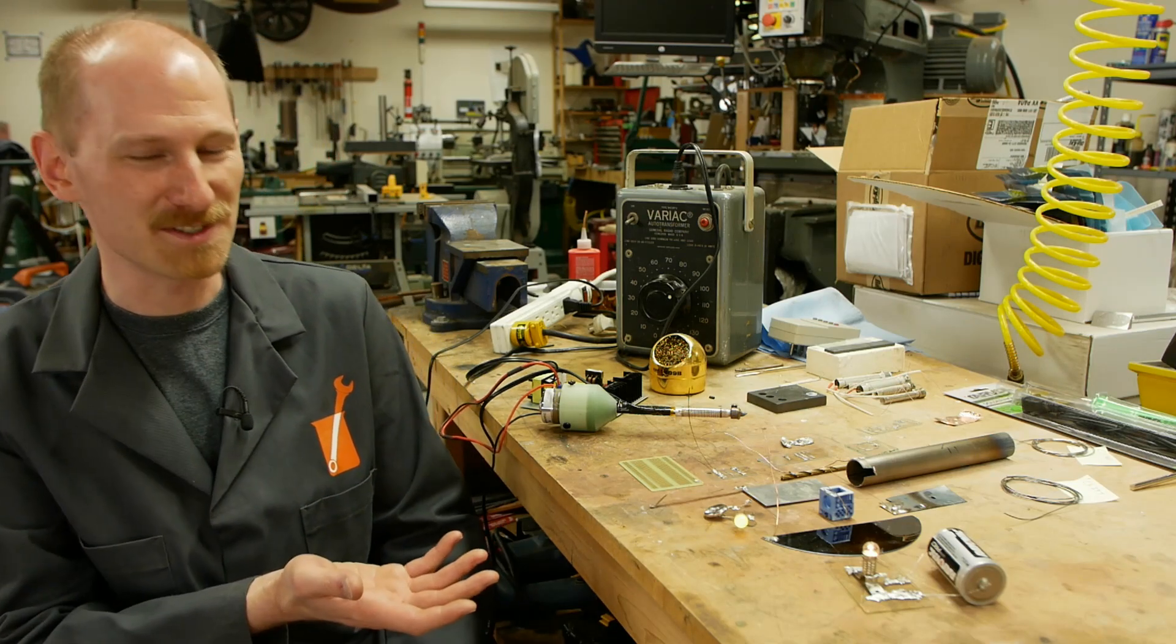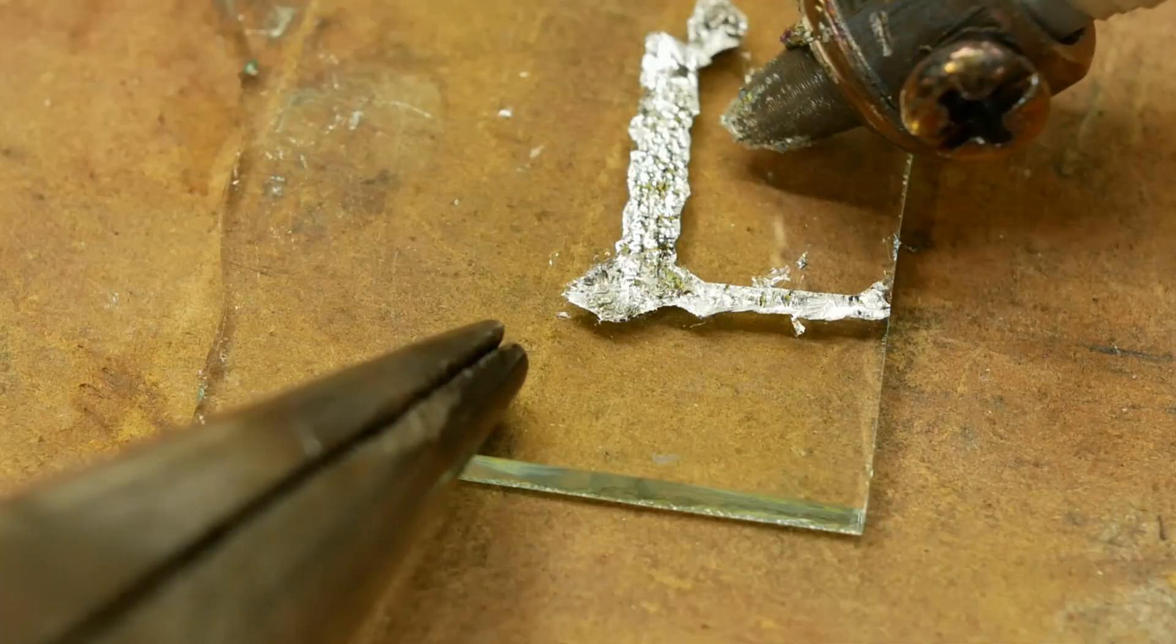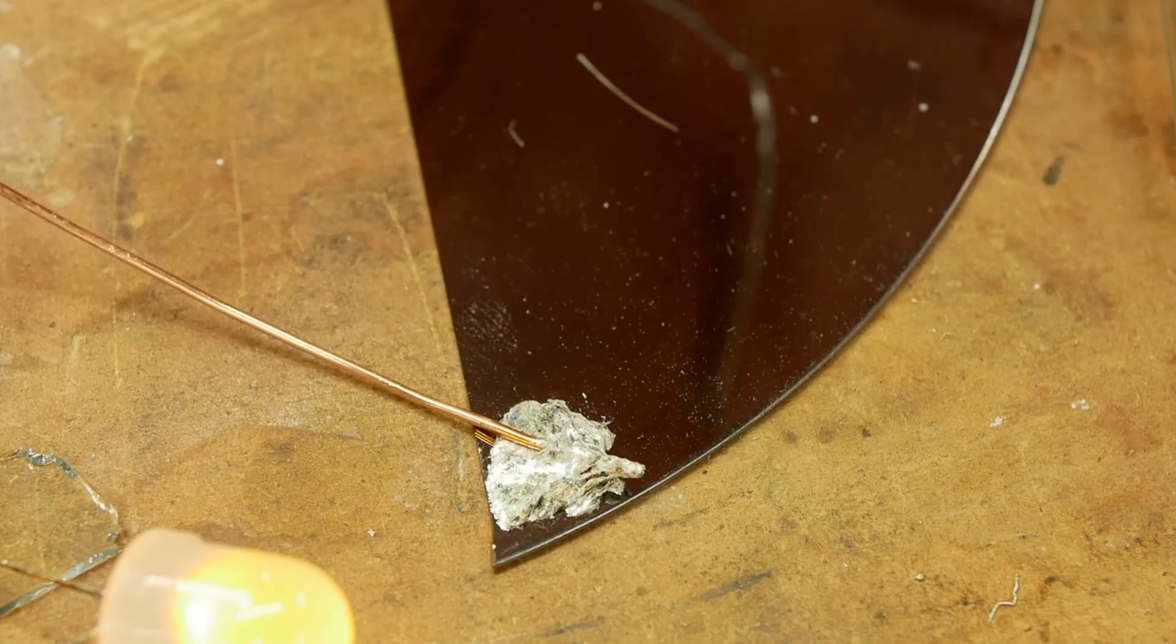Today on Applied Science, I'm going to show you this technique of ultrasonic soldering. This lets you bond all kinds of unusual metals to non-metals, such as copper to silicon.